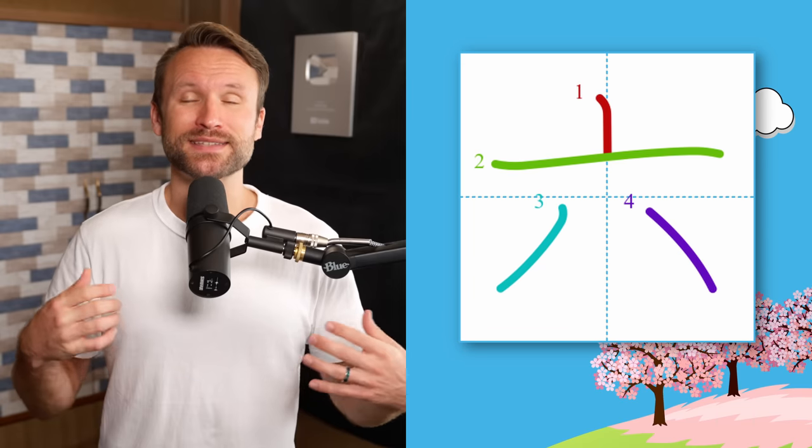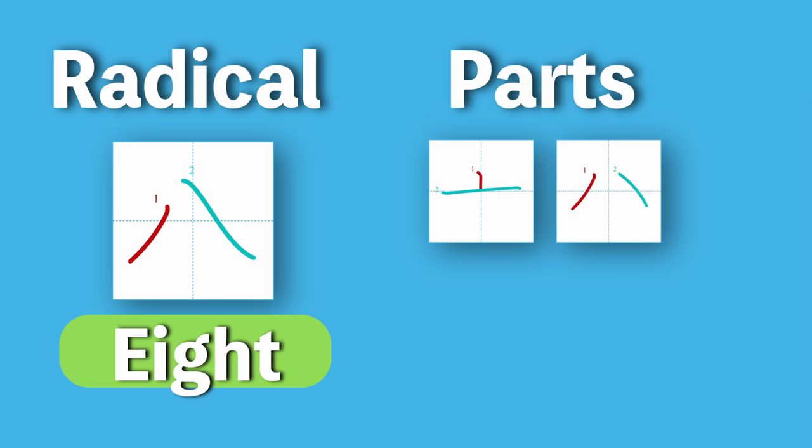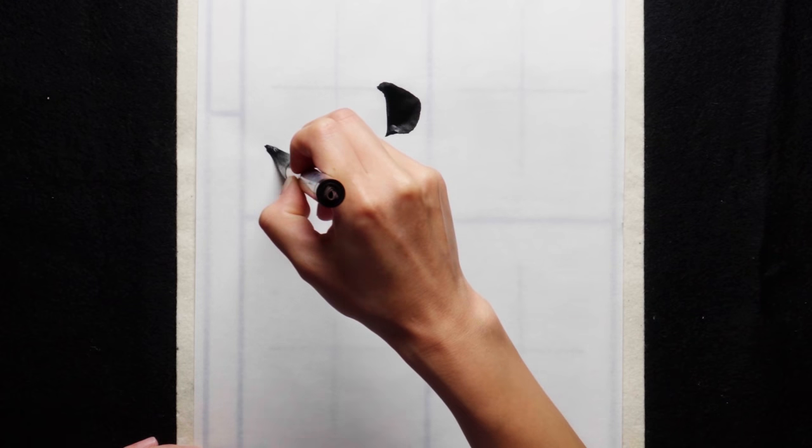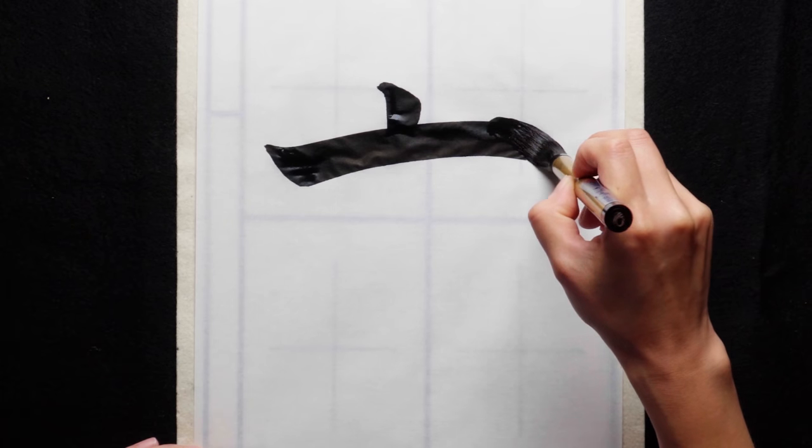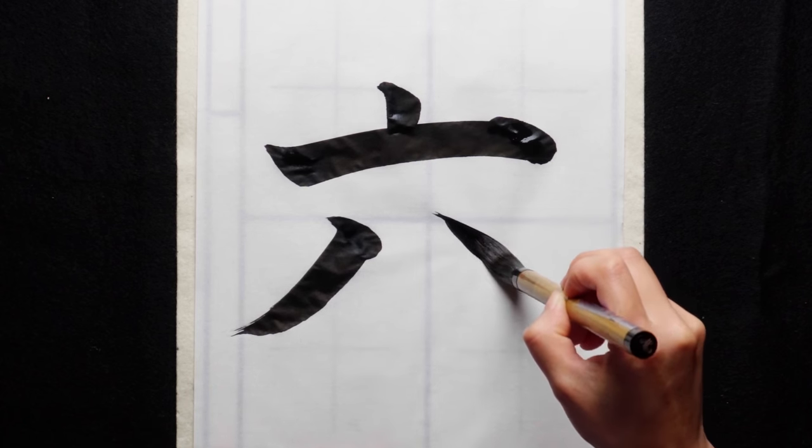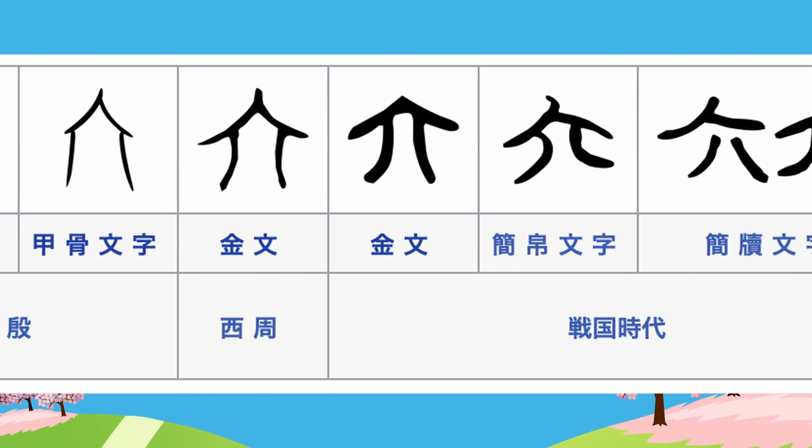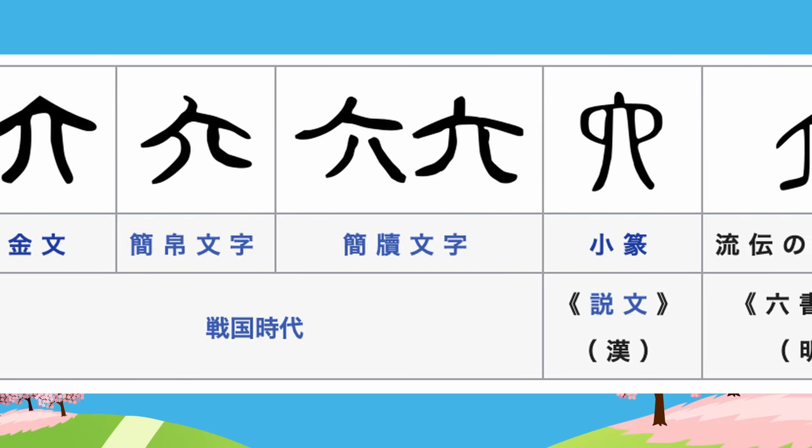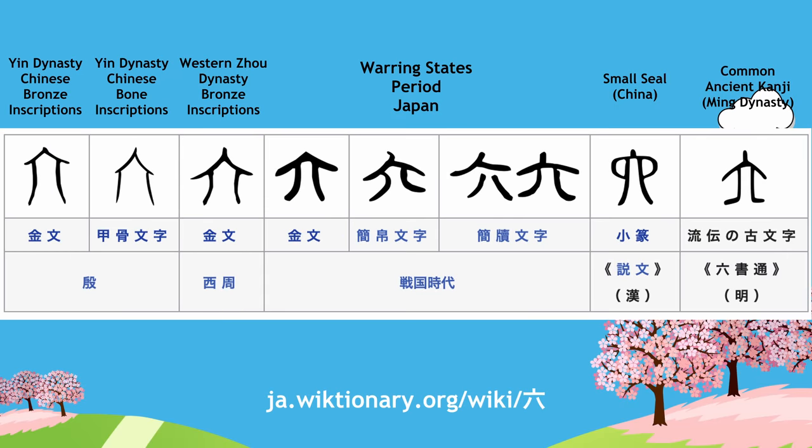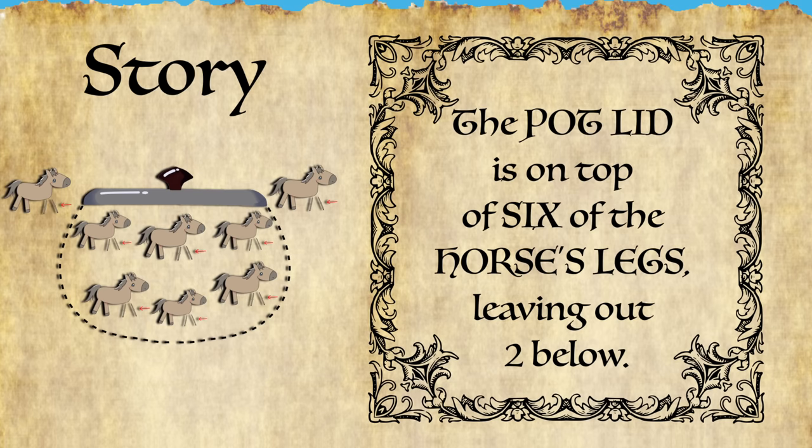Which finally gets us to 6. The official radical for 6 is 8. The parts are potlid and 8 horses' front legs. First, we draw the potlid at the top of the character, and then draw those cute horses' legs on the bottom. Finishing in the southeast as usual. Historically, this kanji hasn't changed a whole lot. Although, I find it super fascinating. The seal version of 6 looked a lot like 4 did at various times in history, with legs coming out of a portal in the sky. What was going on in China back then? Our story for 6 is... The potlid is on top of 6 of the horse's legs. Leaving out 2 below.